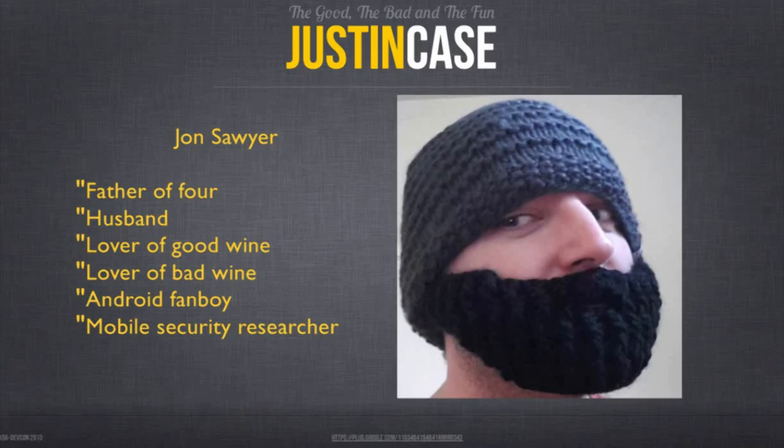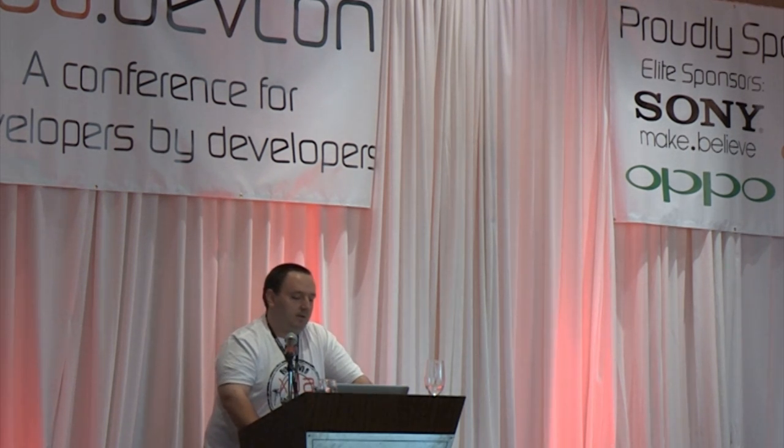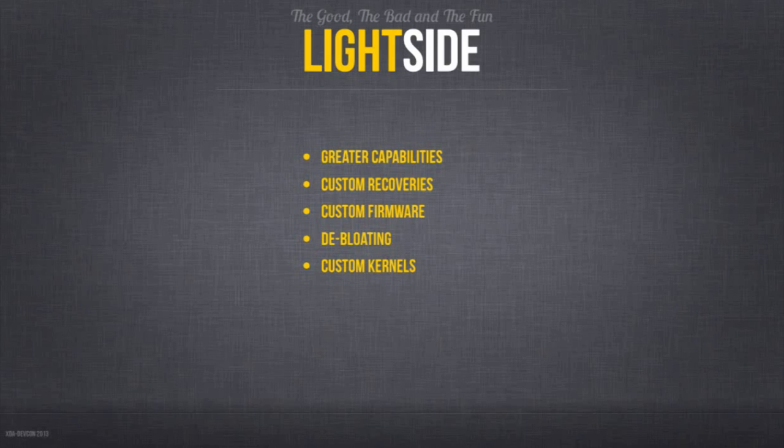I go by JK or Justin K. My name is John Sawyer. I'm a father, a husband, I love good wine and bad wine. I'm an Android fanboy and a professional Android security researcher at full time.